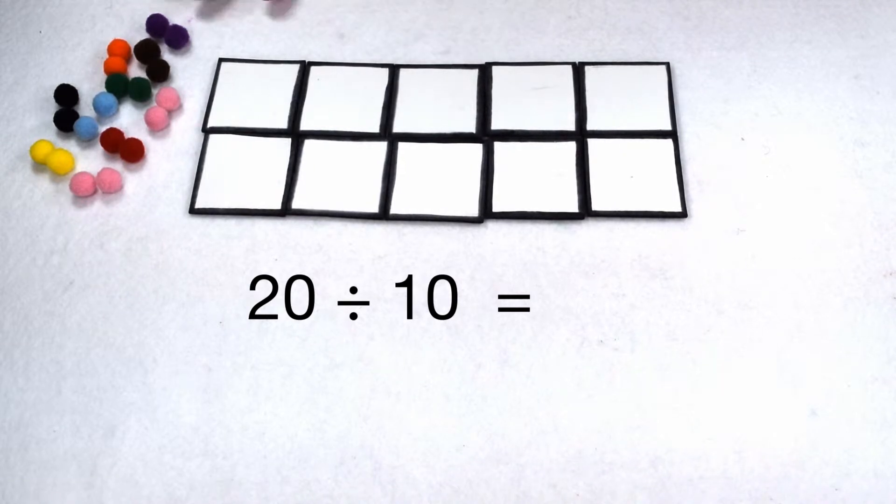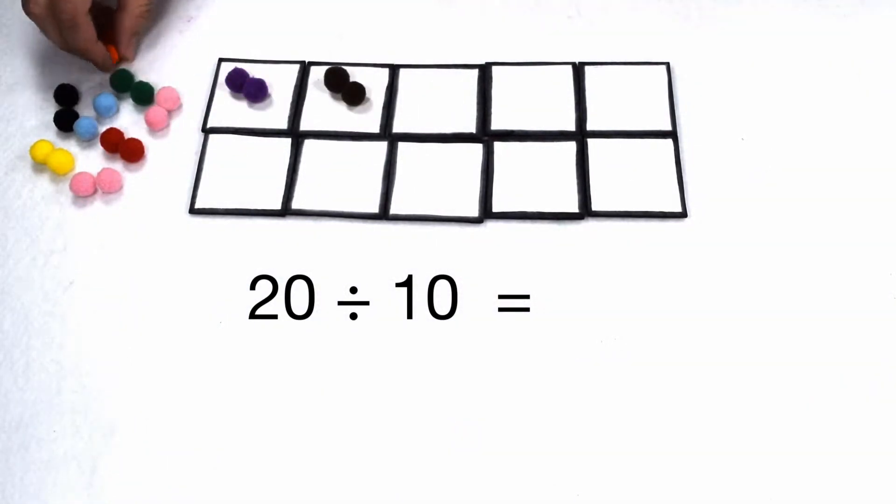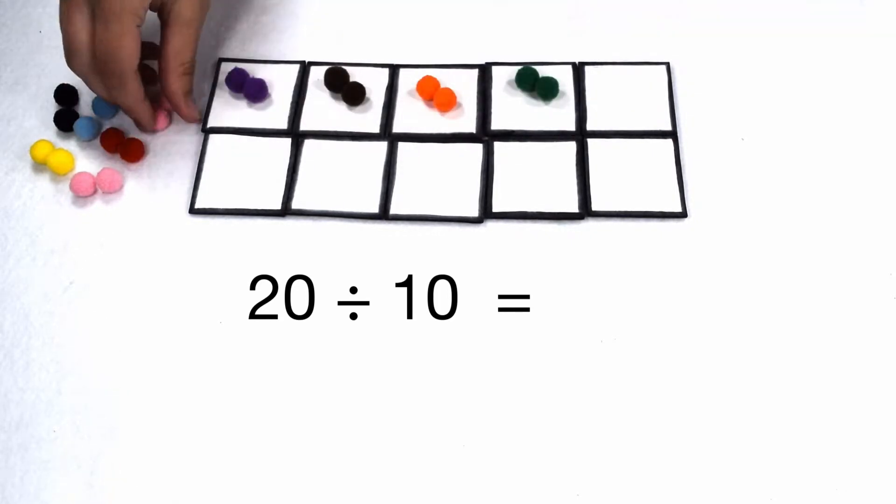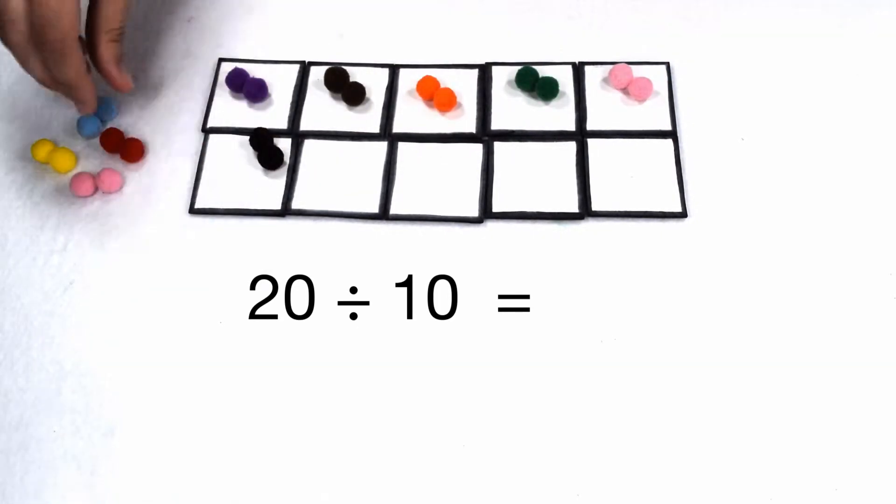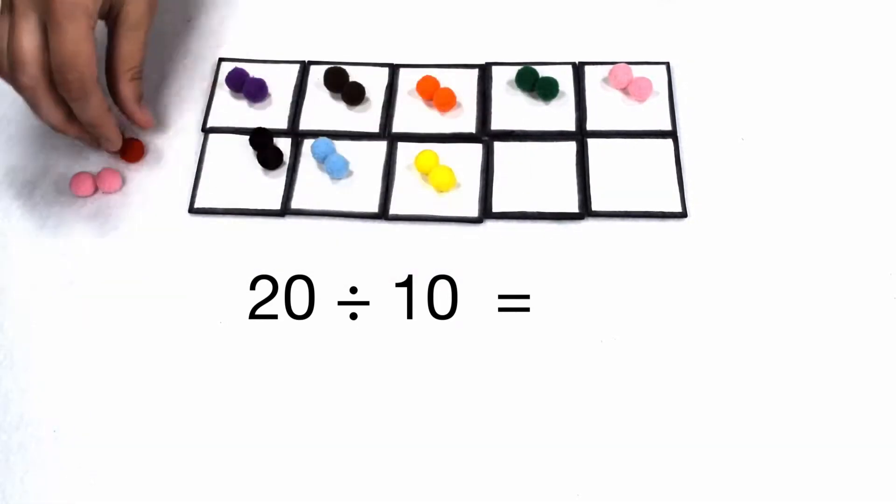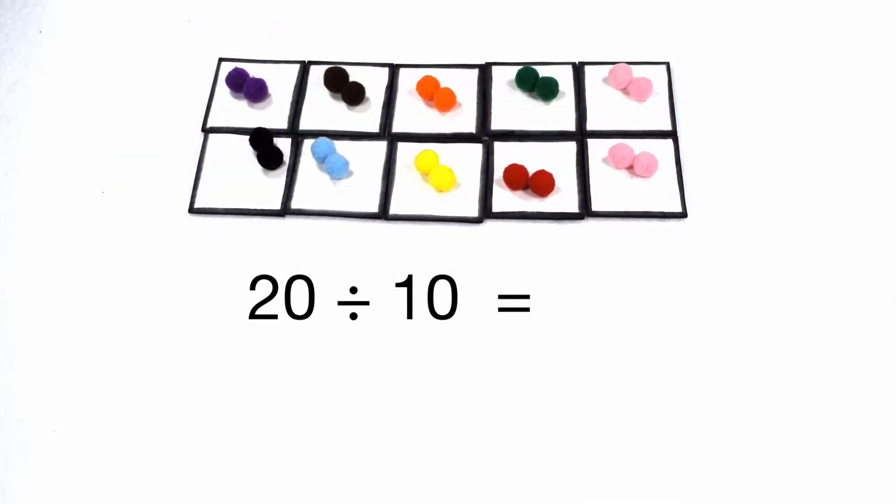Here we have a dividend of 20 and we have a divisor of 10, so we want to solve 20 divided by 10. 20 ends in a 0, so that means I should be able to put 20 items into 10 groups with the same number of items in each group and none left over.